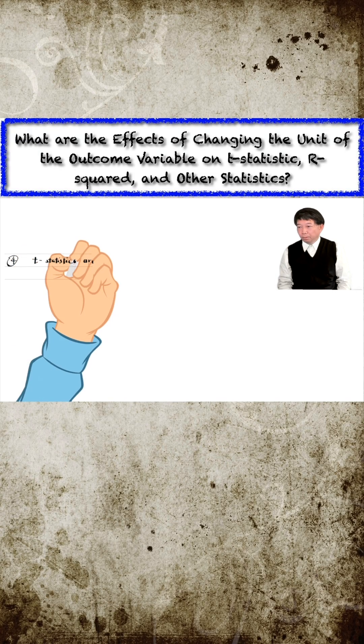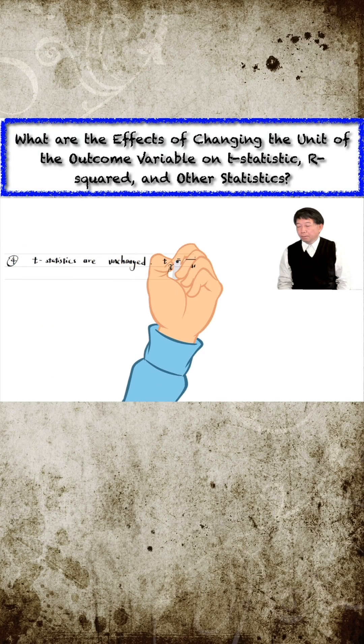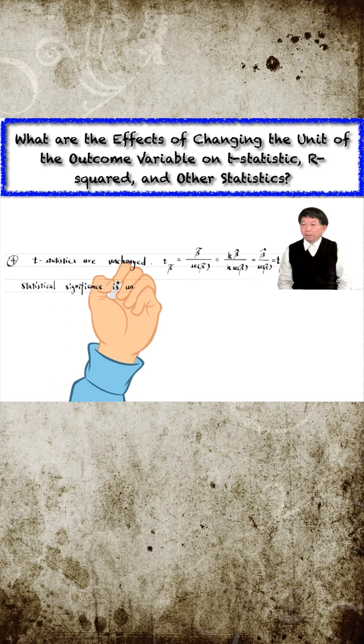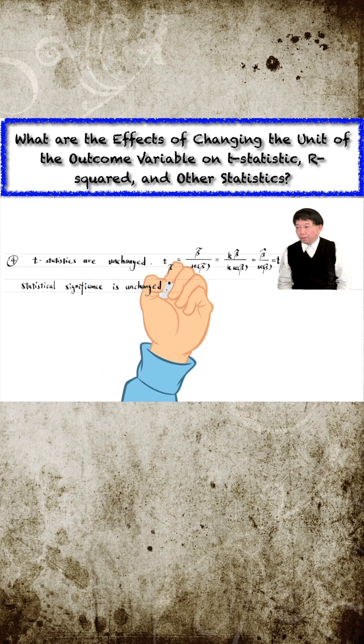The fourth conclusion is about the t-statistic. From its formula, we realize that the t-statistic is unchanged. In other words, the statistical significance of the explanatory variables in the model is unchanged.